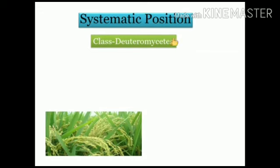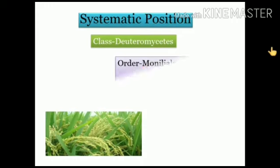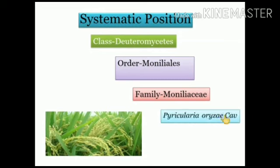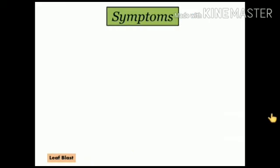The systematic position of the pathogen: it belongs to fungi, class Deuteromycetes, order Moniliales, family Moniliaceae, genus Pyricularia, and species oryzae. Now we learn about the symptoms of the disease so that we can identify the diseased plant easily.